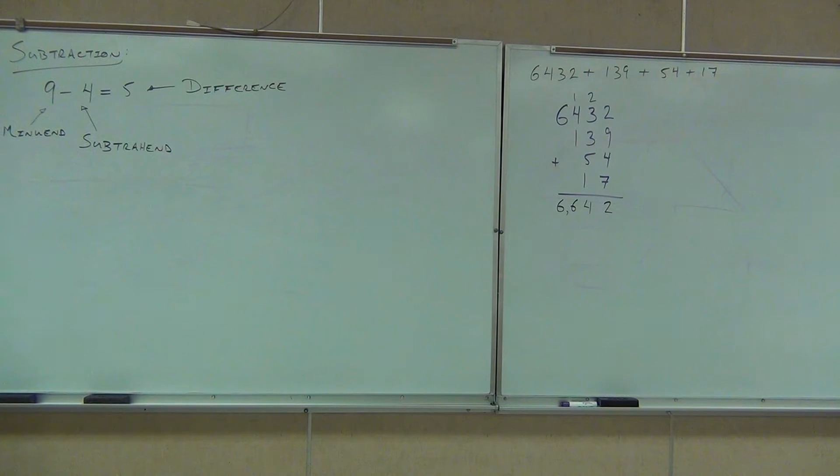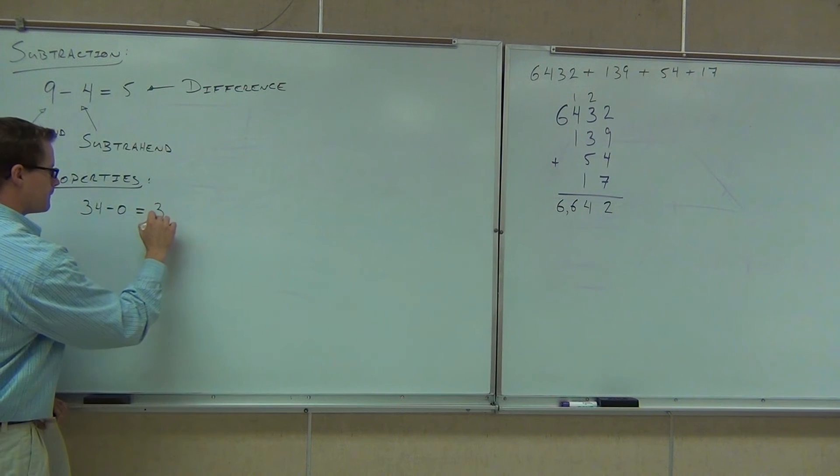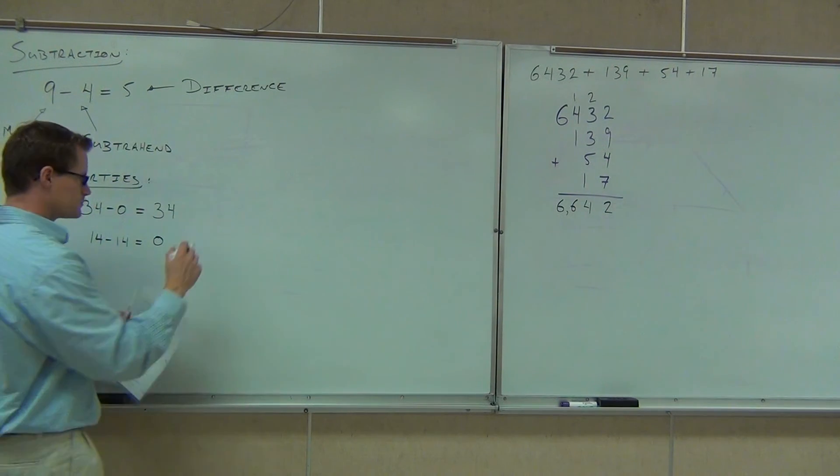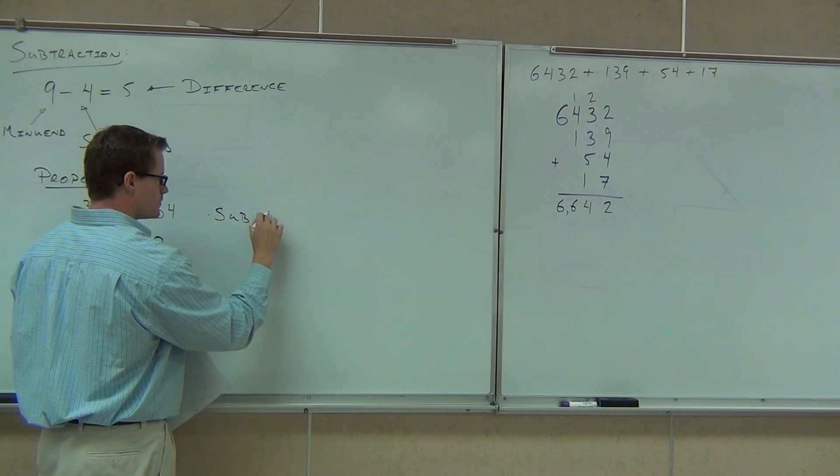So the only property we really have for subtraction is this subtraction property of zero, like the addition property. For instance, if I take 34 minus zero, how much is 34 minus zero? Just gives it right back to us. That's the one that's like addition. Also, one more thing. What if you subtract a number from itself? 14 minus 14, a number from itself? What is a number subtracted from itself? How many of you know? Yeah, this is the property of zero for subtraction. Or the subtractive property of zero. Okay.